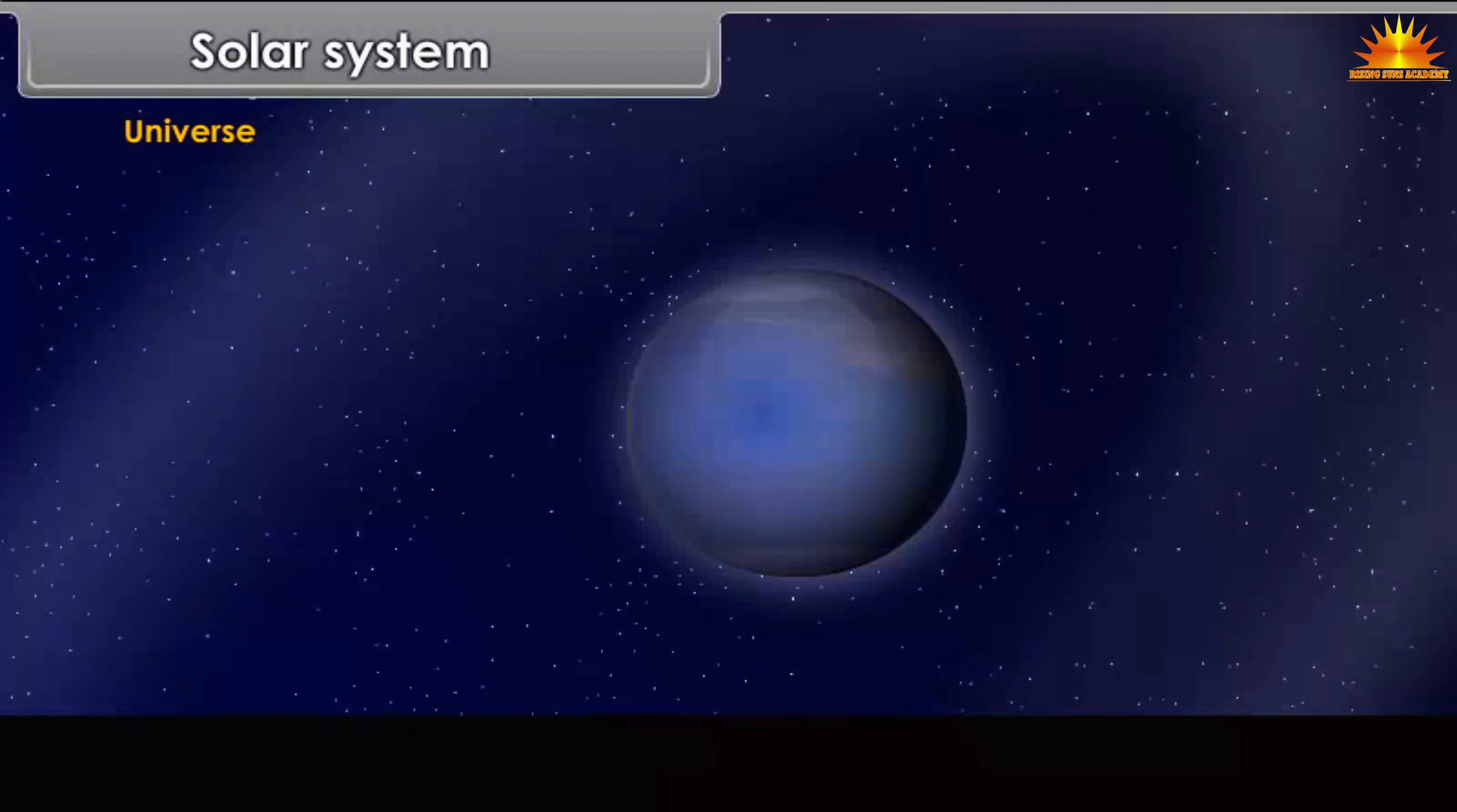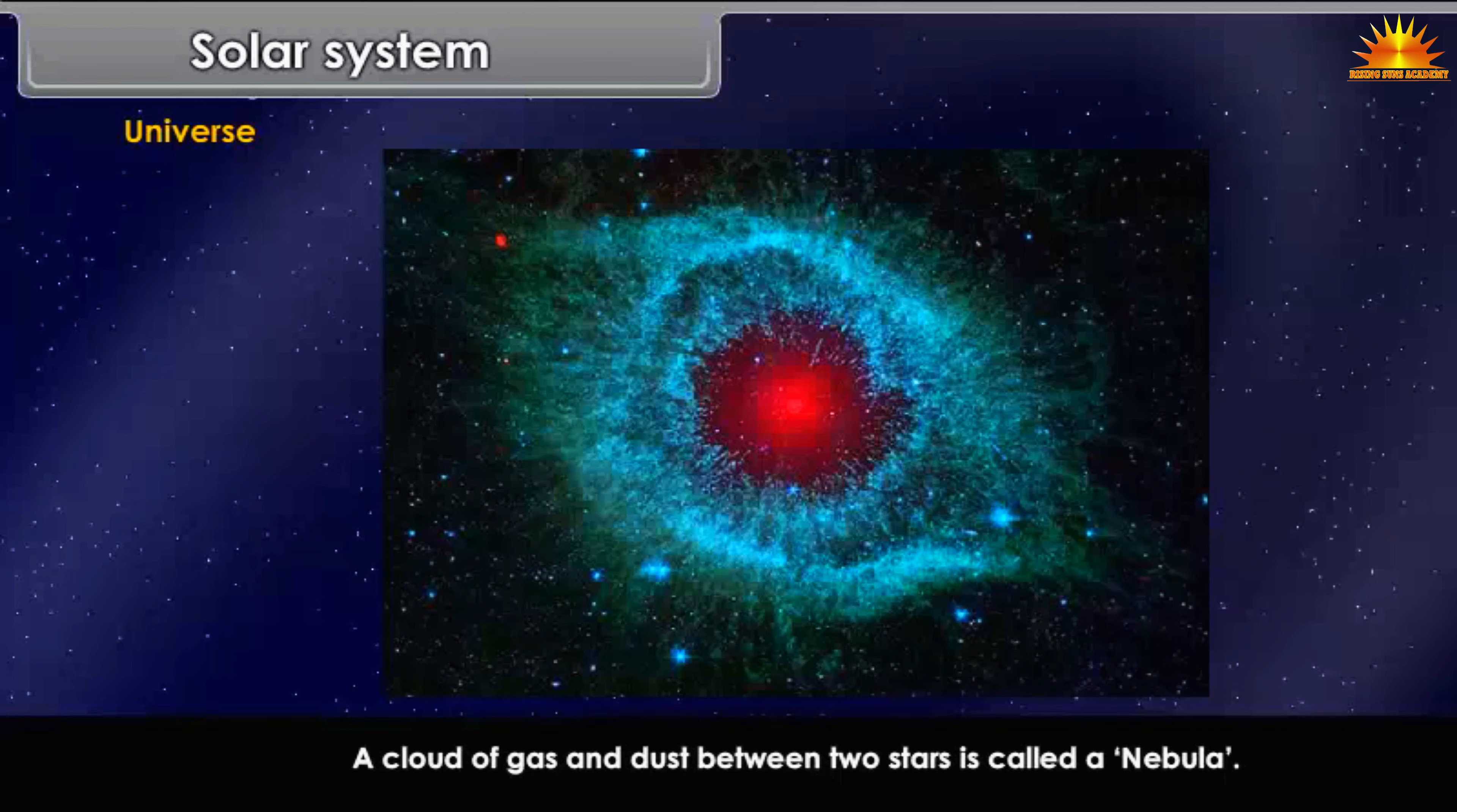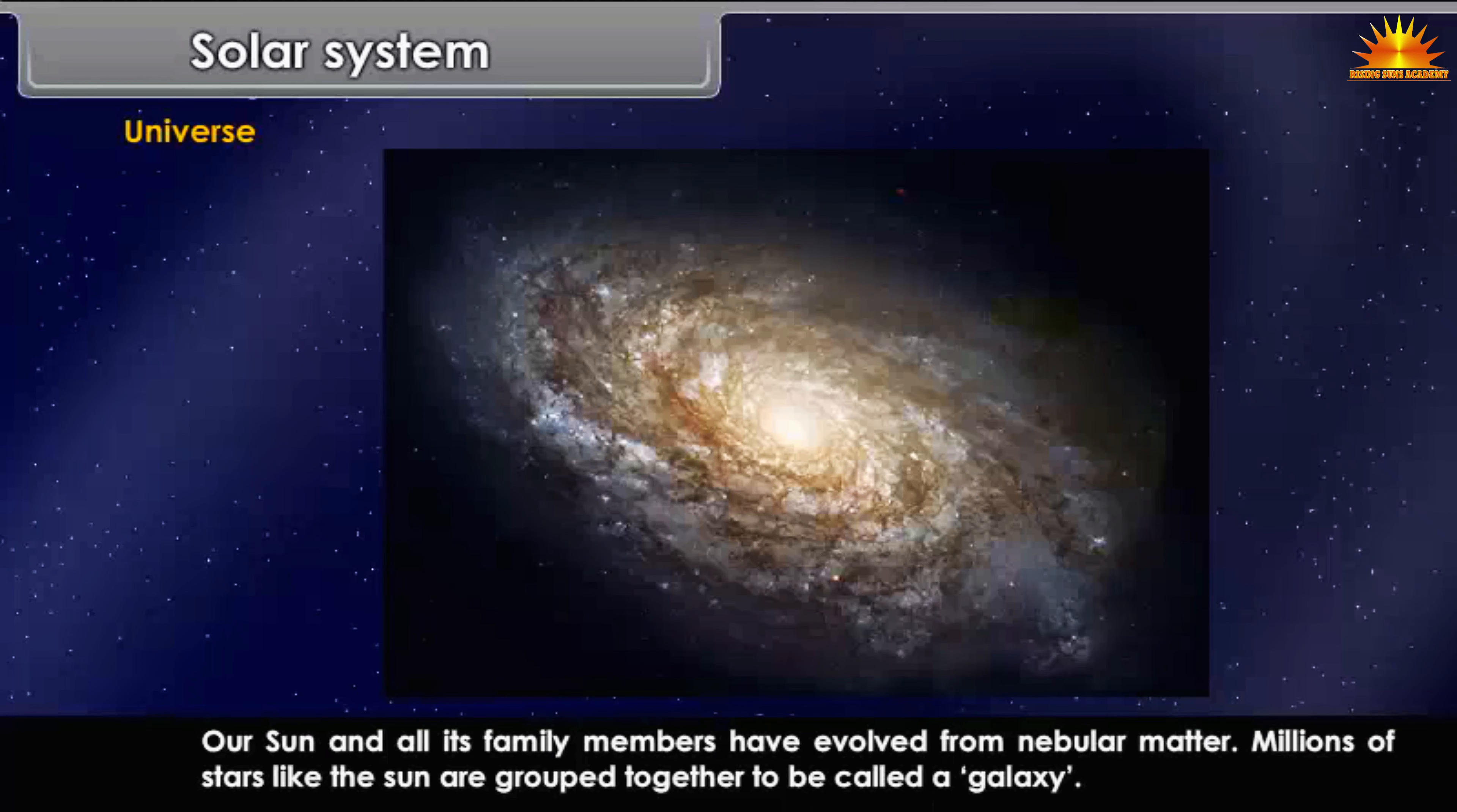Universe: Our Earth is a small planet in the solar system. There are many millions of stars like the sun and some of these stars also have planets revolving around them. A cloud of gas and dust between two stars is called a nebula. Our sun and all its family members have evolved from nebular matter.